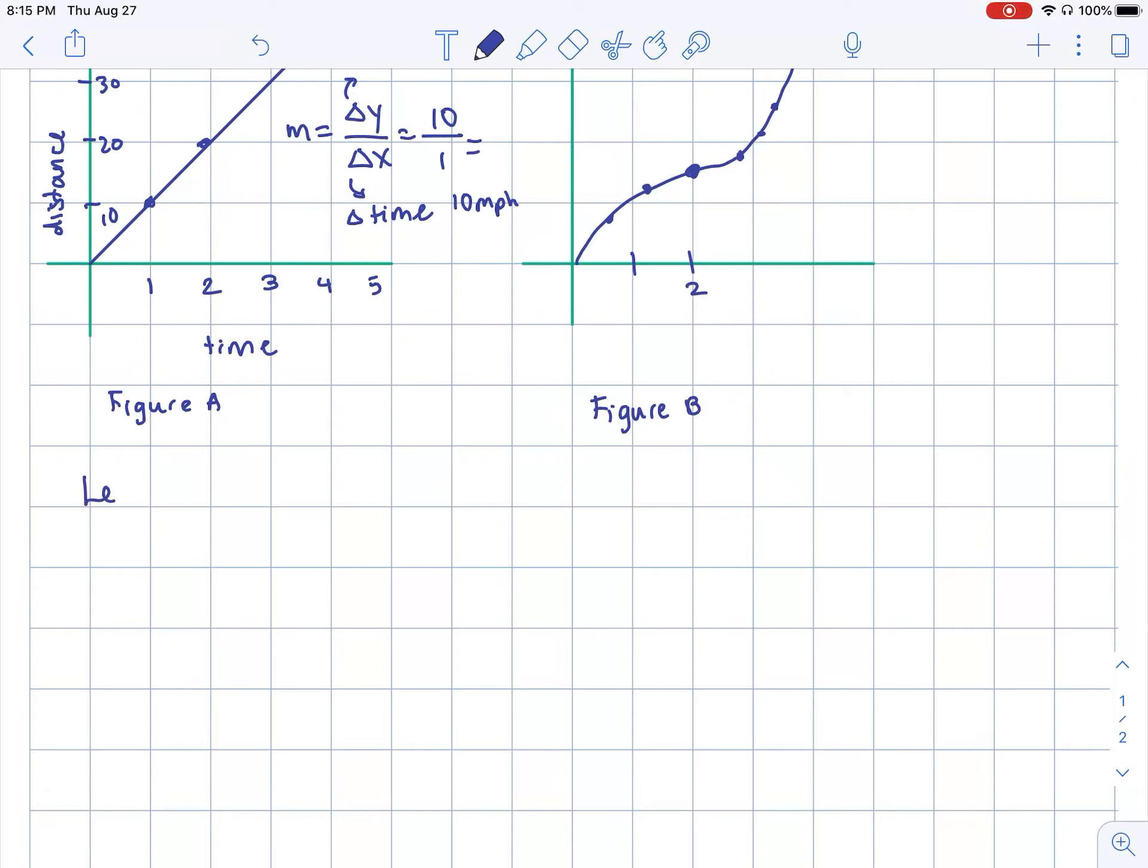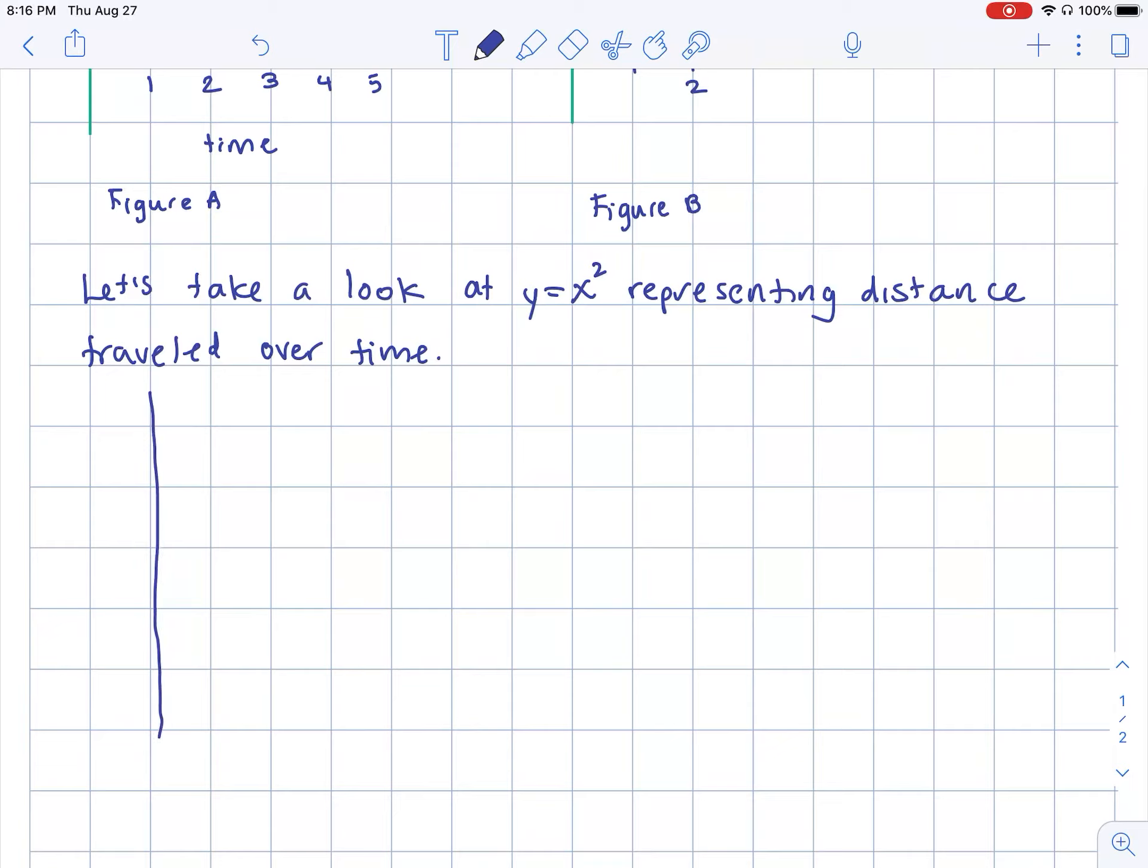Let's take a look at y equals x squared representing distance traveled over time. So when I'm looking at this curve, we all know what it looks like. Time is only positive in the first quadrant. So we'll begin with plotting y equals x squared in the first quadrant only because we know that our distance and time must be positive.